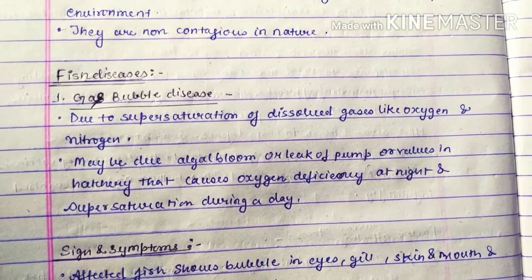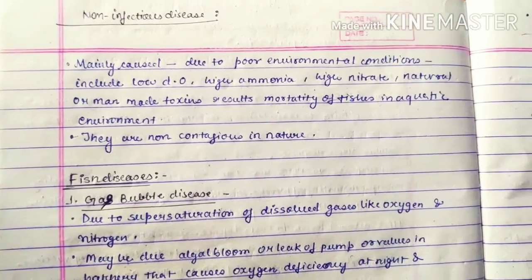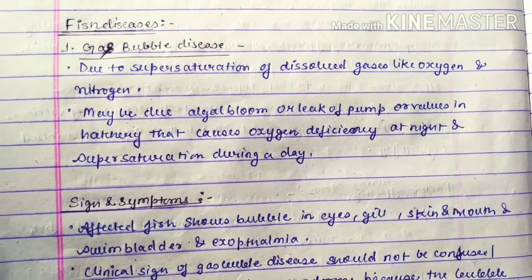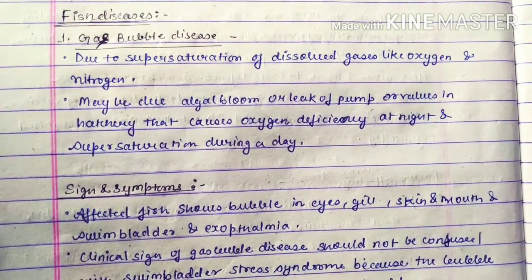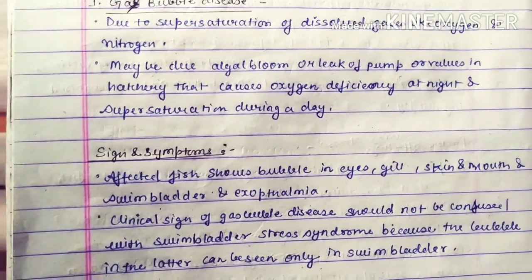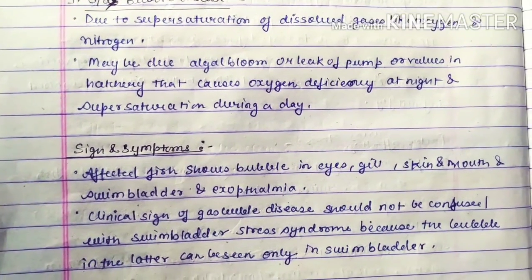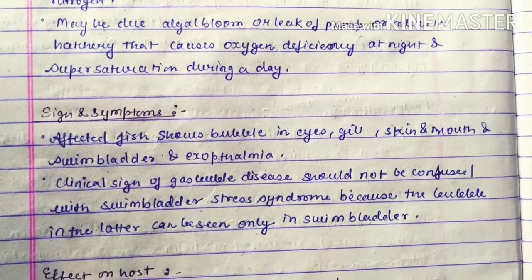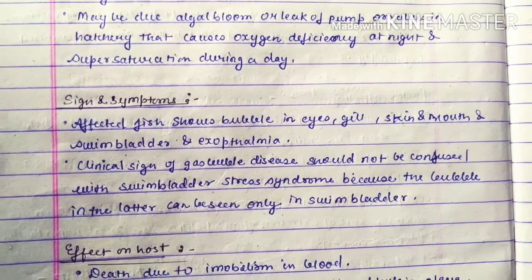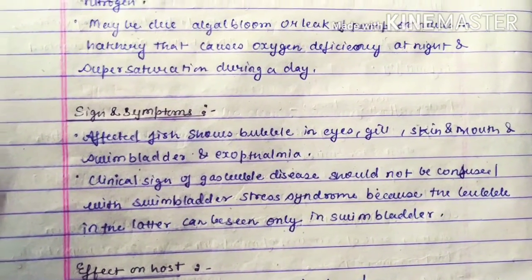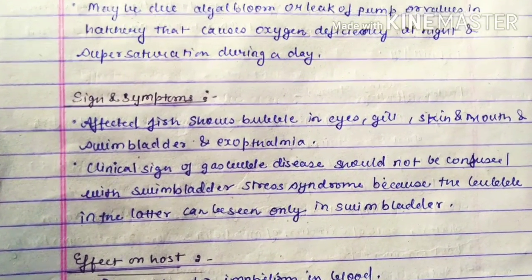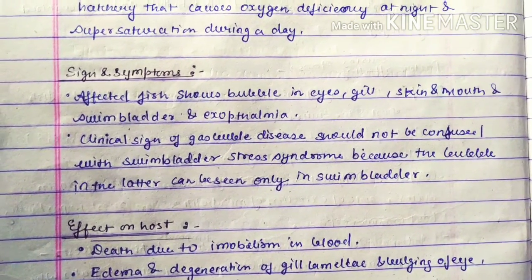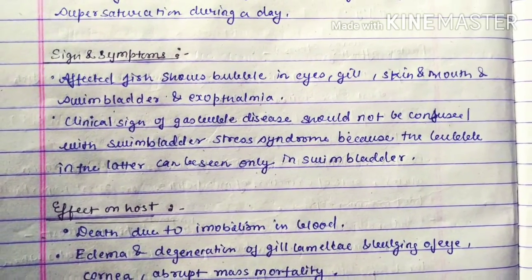They are non-contagious in nature. Fish disease caused due to non-infection — the first is gas bubble disease. This is mainly caused due to supersaturation of dissolved gases like oxygen and nitrogen, possibly due to algal bloom or a leak of pump or valves in a hatchery. Signs and symptoms include bubbles in the eyes, gill, skin, and mouth, as well as the swim bladder and exophthalmia.